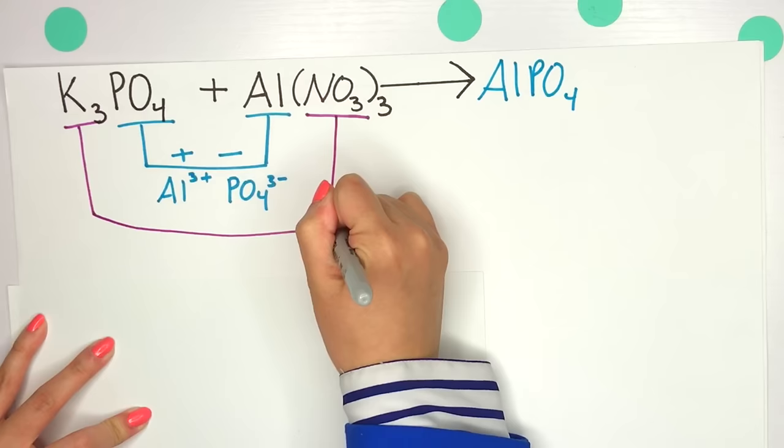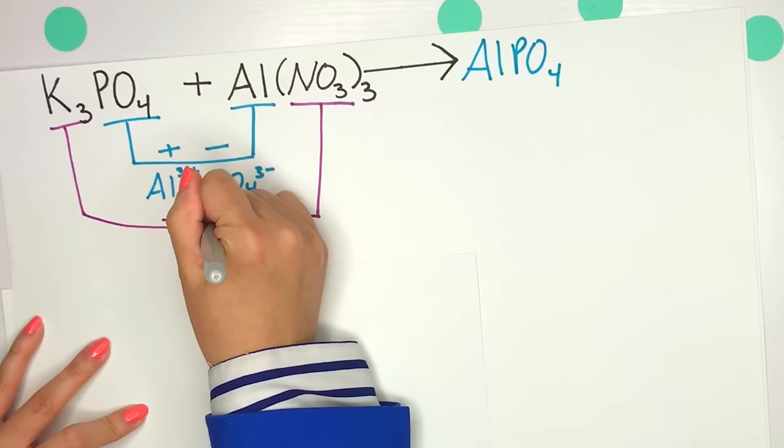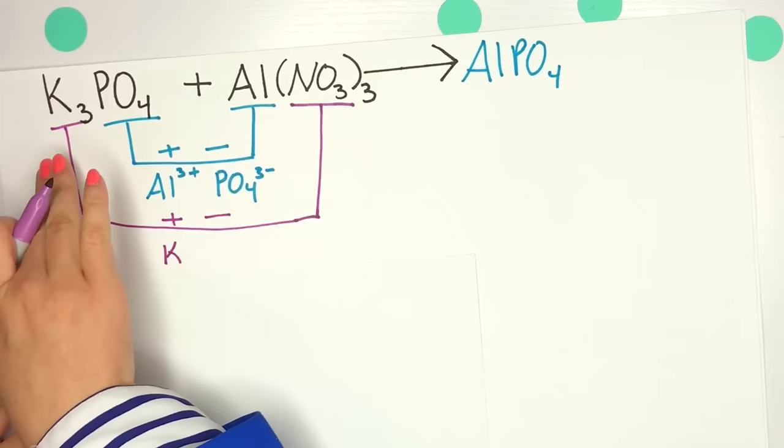Always thinking positive before we think negative. We're going to put that potassium first, since that is our metal and that's our positive charge. And then it will be followed by nitrate, since that's our negative charge.